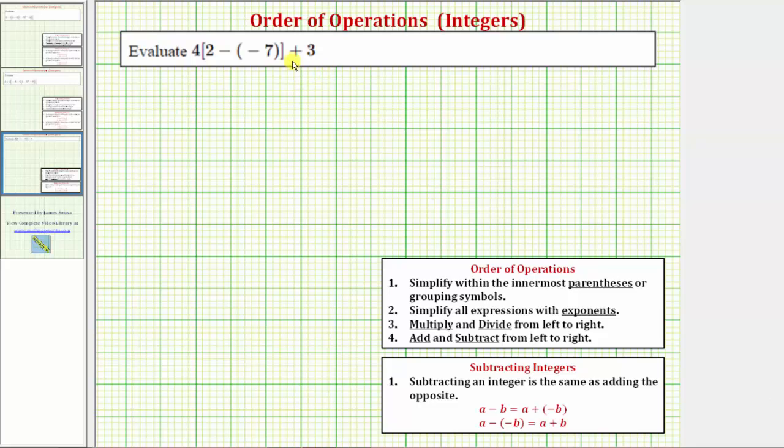We want to evaluate the given expression. The directions may also say simplify the given expression. To evaluate or simplify an expression, we follow the order of operations outlined here below. Notice there are four steps in the order of operations.